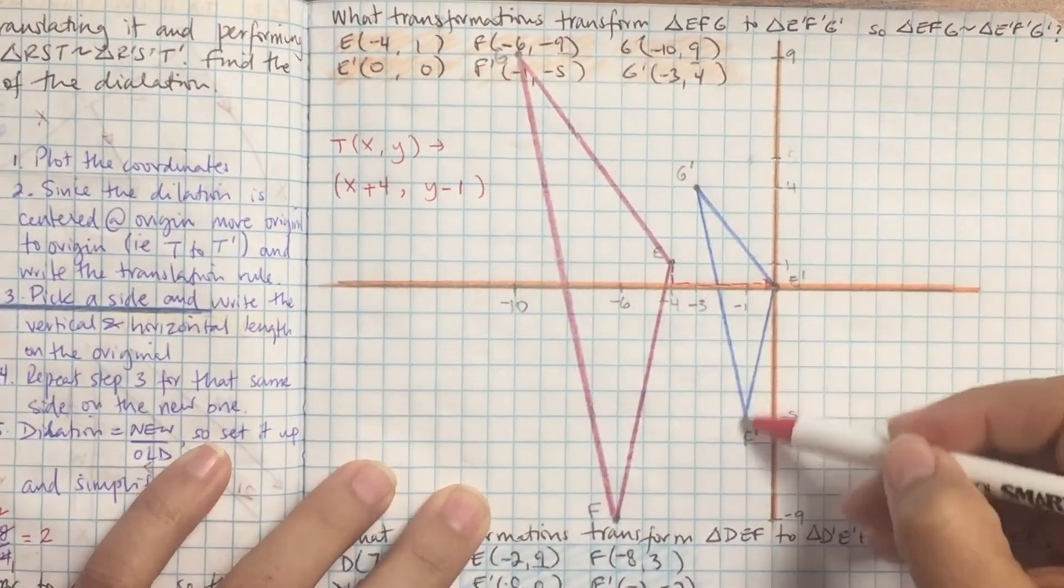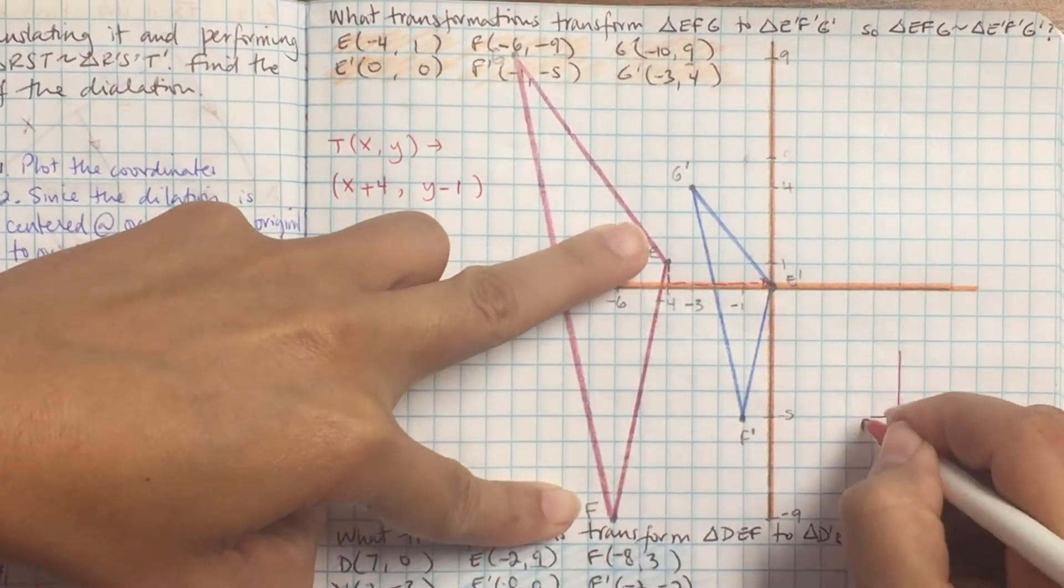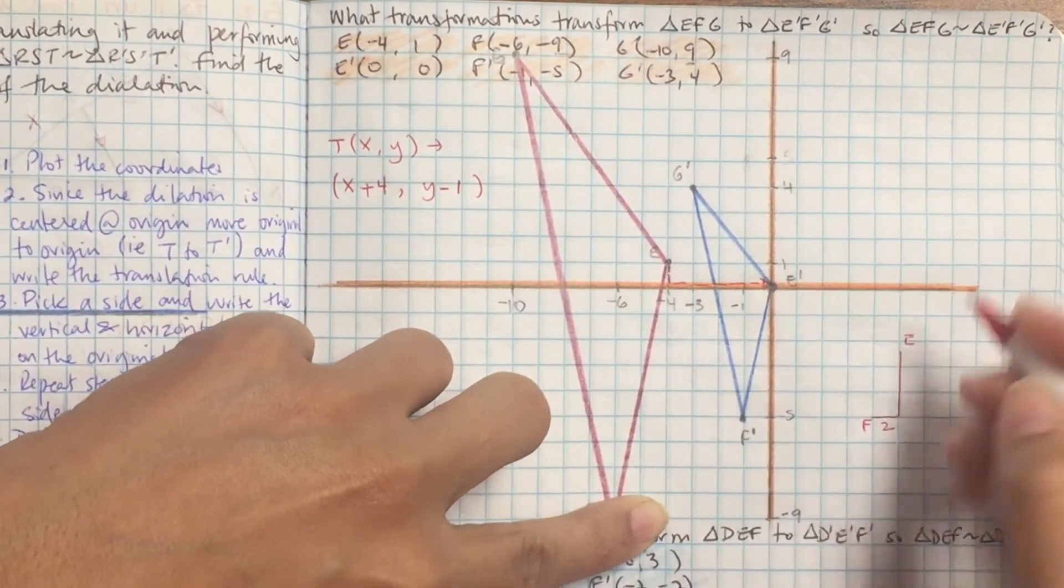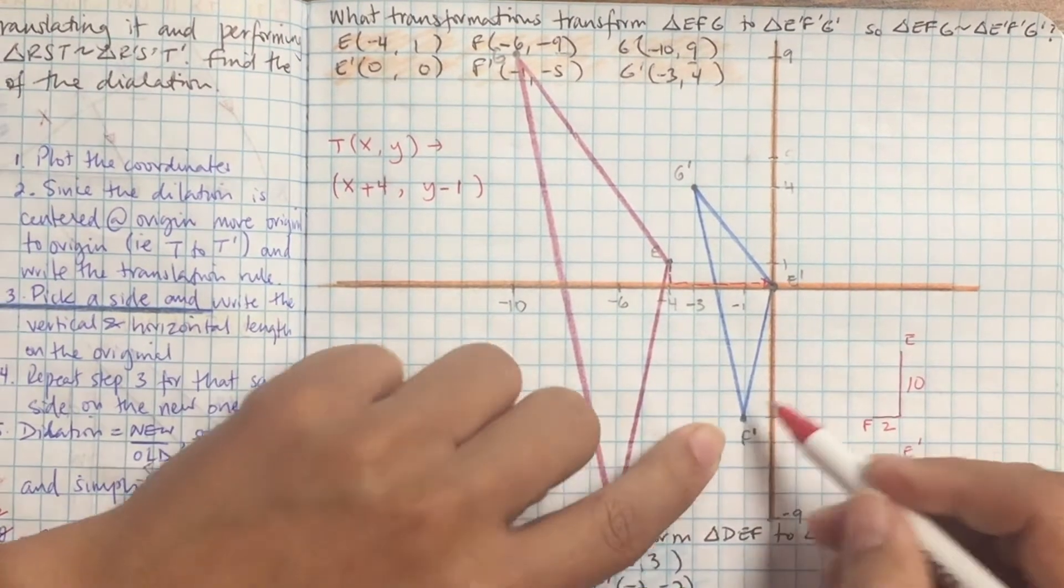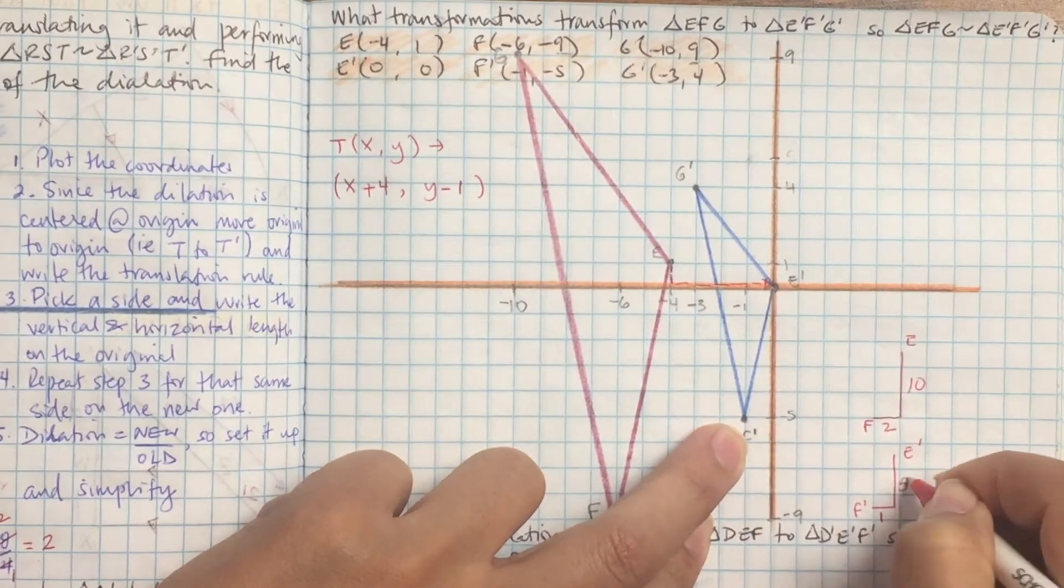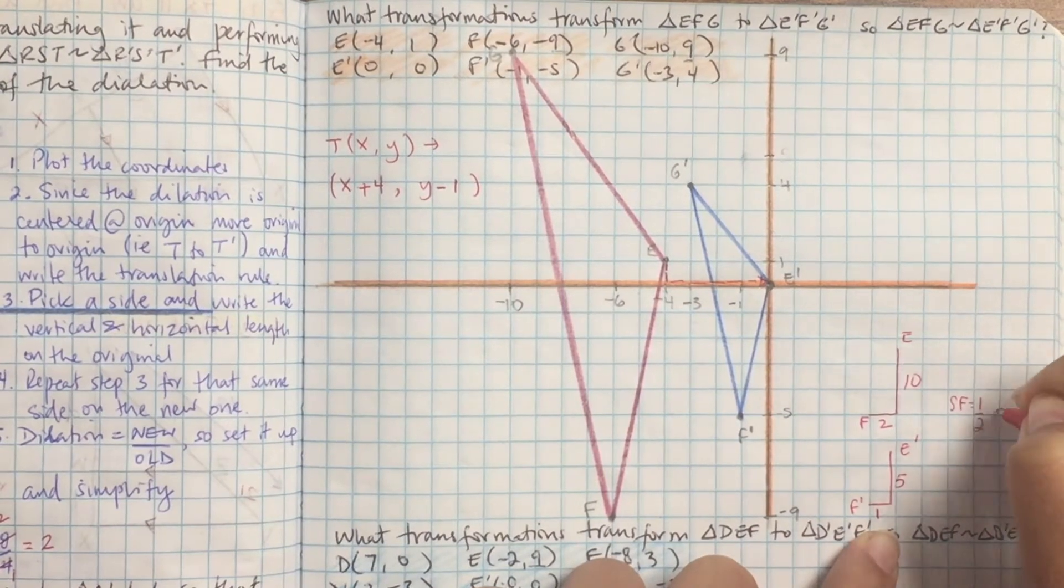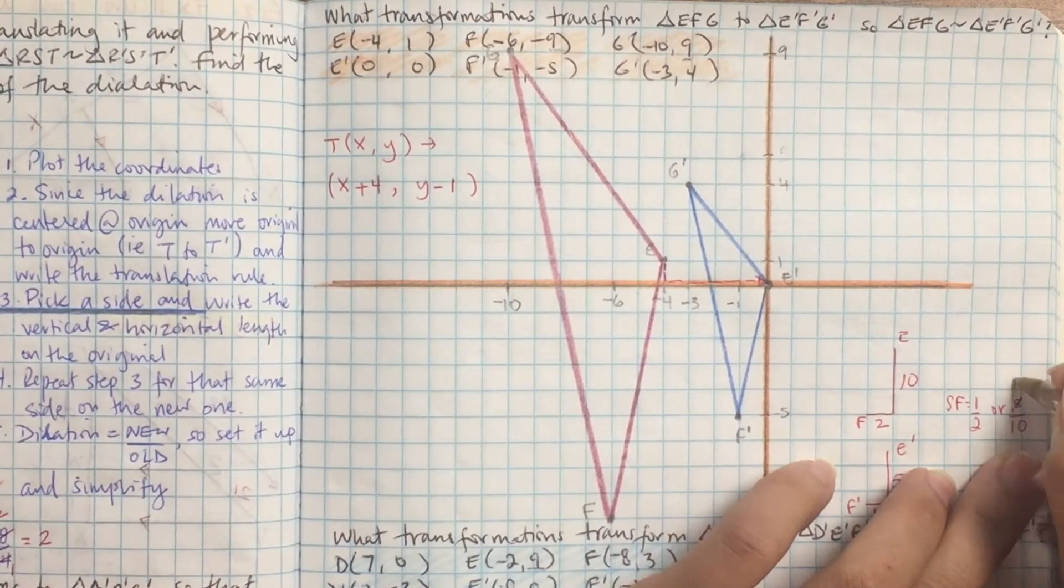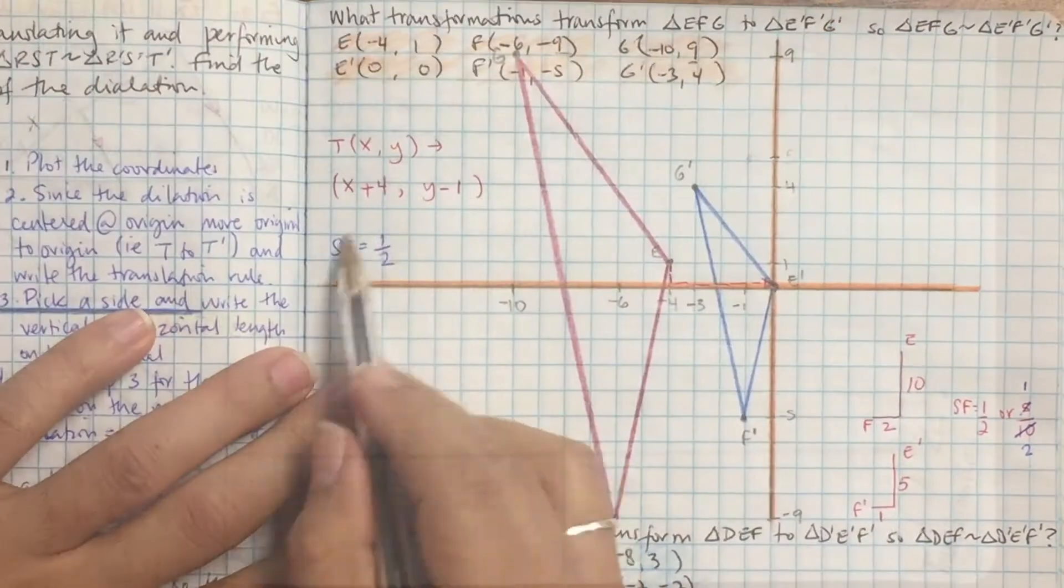Scale factor is pick any side. I'm going to pick EF. So that's going to be of the original 2 and then 10 up. And then of the new one, I'm going 1, 1, and then I went 5 up. Alright, so then set it up new over old. So that's going to be 1 over 2 or 5 over 10. You can simplify the 5 over 10. 5 divided by 5 is 1, 10 divided by 5 is 2. So scale factor is half. And it makes sense because it got smaller.